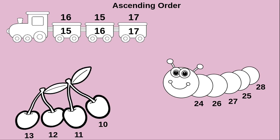Next they have given 24, 26, 27, 25, 28. Ascending order means smallest number to greatest. The smallest number here is 24, so we write that first. After that 25, then 26, then 27, and at last the remaining number is 28. Now we have arranged these numbers in ascending order.